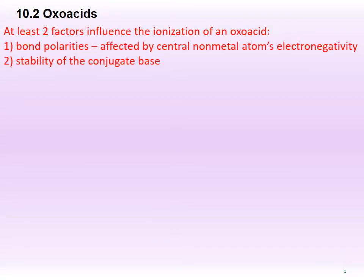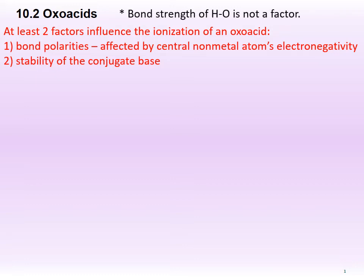There are at least two factors that influence the ionization of an oxoacid: bond polarities, which are affected by the electronegativity of the central non-metallic atom, and the stability of the conjugate base. Bond strength of the HO bond in the oxoacids is not a factor since this bond is present in all oxoacids. An example of an oxoacid is chloric acid, HClO₃, as shown here.